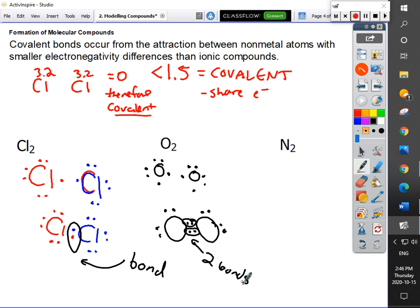Which brings us to nitrogen. Nitrogen has how many bonding electrons? Three. How many lone pairs? One. So how many bonds do you think nitrogen needs to form? Three. So nitrogen forms what's called a triple bond. Shane asked a great question about whether it's harder to break apart oxygen than chlorine, and it is.